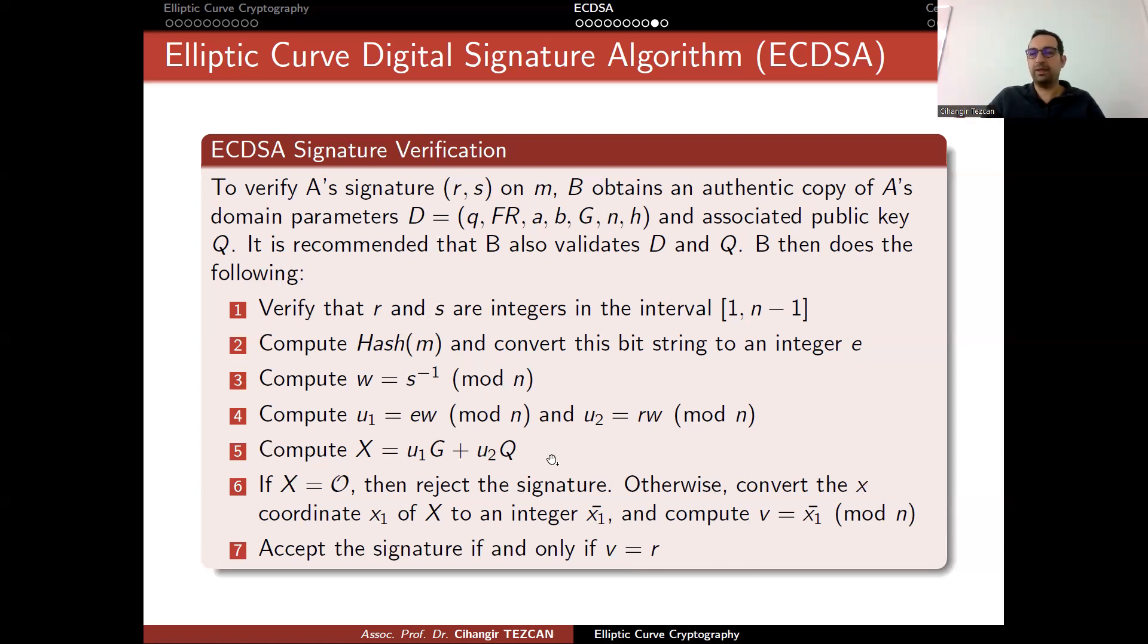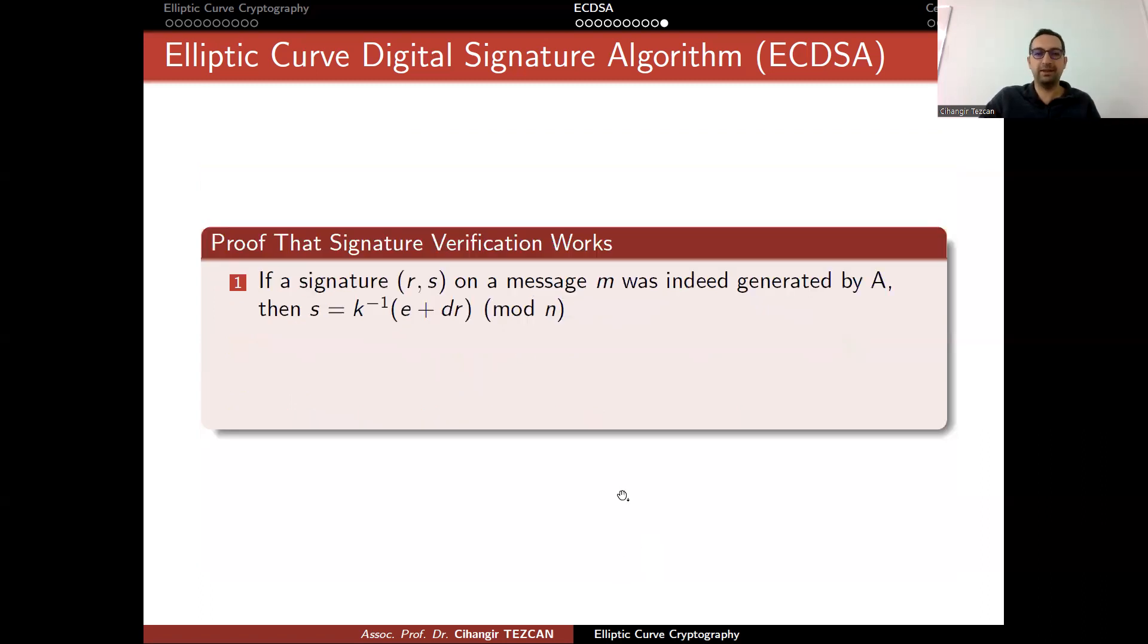Of course, you might ask why this works, but we actually went through the steps when we talk about digital signature algorithm. But it comes from q being d times g. d is the private key of a, which we don't know, but the verification works. This way, you verify the signature.